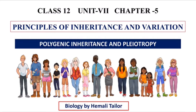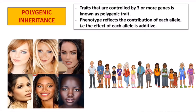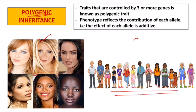Let us first start with polygenic inheritance. The name 'poly' means many and 'genic' means genes, so there will be many different genes. You will see that in humans — height, skin color, hair color, and eye color — there are many variations. These variations are because of genes.